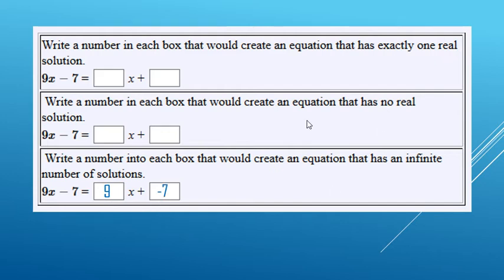For no solutions, the coefficients have to be the same, so a 9x and a 9x, and then the constant cannot be a negative 7. So here's an example.